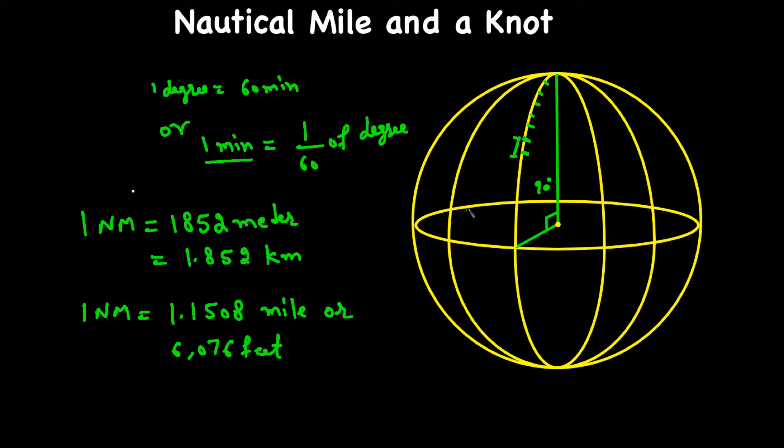And the knot—knot is a unit of measure for speed when the distance is measured in nautical miles. So basically, if you are traveling at a speed of...